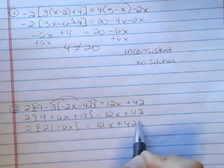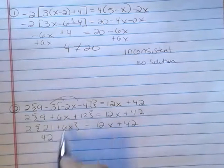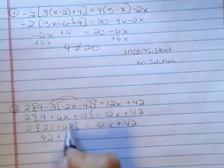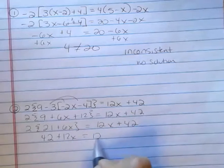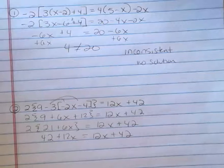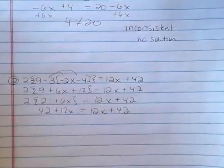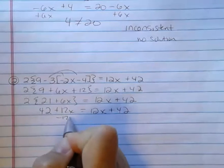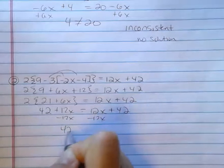And then 2 times 21 is 42 plus 12x equals 12x plus 42. That's exactly the same on both sides. Once I realize that, I know I have an identity. But if I don't feel comfortable yet, I can go on.